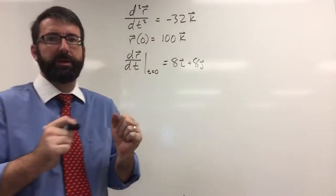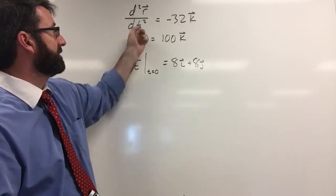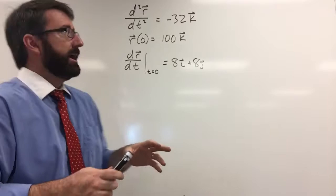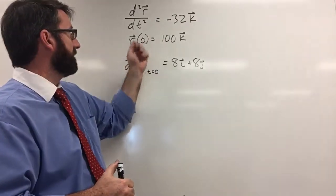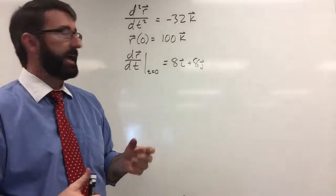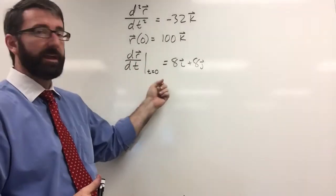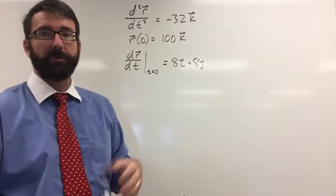All right, for this example, we're given this differential equation. The second derivative of r with respect to t is equal to negative 32k. And we're given these initial conditions that r of 0 is equal to 100k, and the derivative of r with respect to t evaluated at t equals 0 is 8i plus 8j.